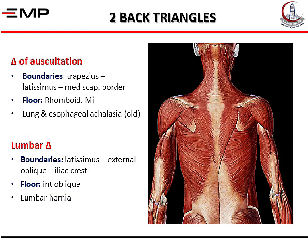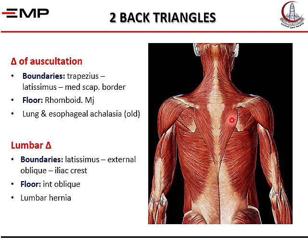In the second plane, deep to the rhomboids, we have the nerve that supplies them — the dorsal scapular nerve — together with the deep branch of the transverse cervical artery. On the back, we see two triangles. This one is called the triangle of auscultation, and the one below is called the lumbar triangle.